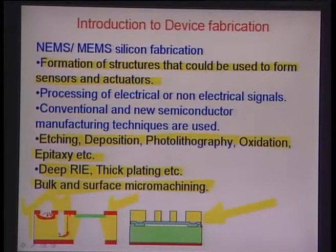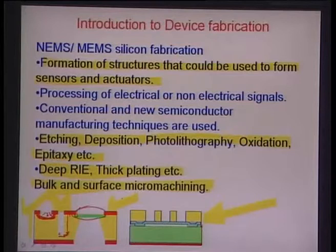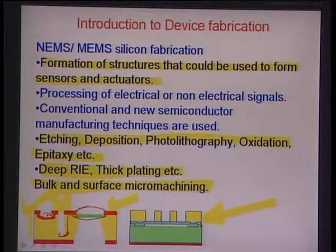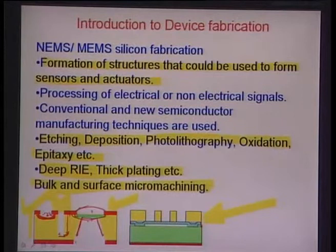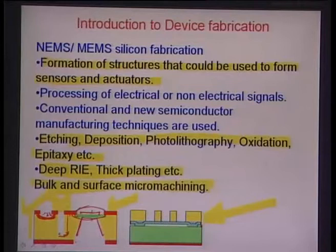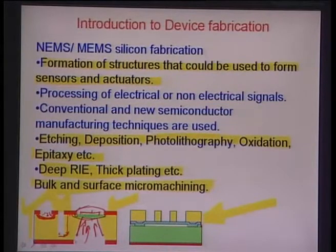A thin diaphragm can be realized using P+ silicon achieved by doping. Essentially it is a two-sided process: on the front side, etching removes the sacrificial layer, and on the bottom side, material is removed until the etch stops at the P++ layer, leaving a very thin film or diaphragm. One application is a pressure transducer, where a piezo material on the membrane bends due to applied pressure, generating a measurable electrical signal.